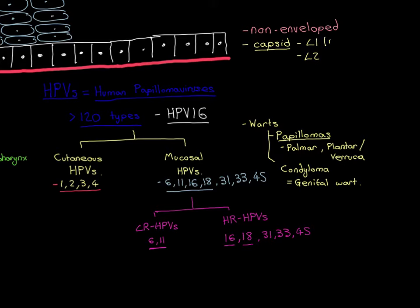You have a lot more L1 in the capsid than L2, so L1 is called the major capsid protein and L2 is called the minor capsid protein. Both are important — without both, you don't get successful complete entry of the human papillomavirus particle. However, if you don't have L2 you'll get far along the process; it just doesn't finish. L2 is only needed right at the very end of the entry mechanism.